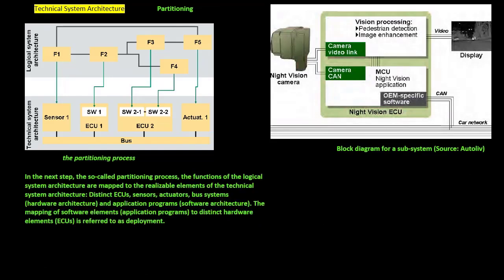In the next step, the so-called partitioning process, the functions of the logical system architecture are mapped to the realizable elements of the technical system architecture: distinct ECUs, sensors, actuators, bus systems, and application programs. The mapping of software elements to distinct hardware elements is referred to as deployment.